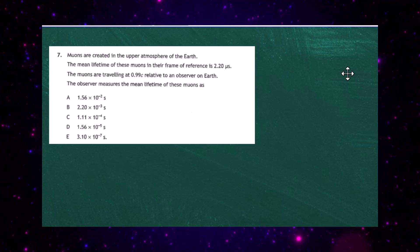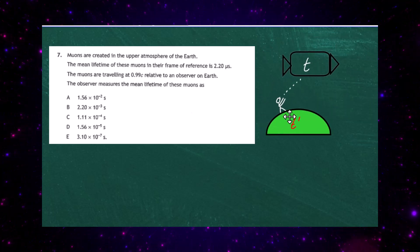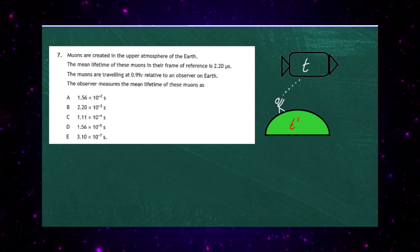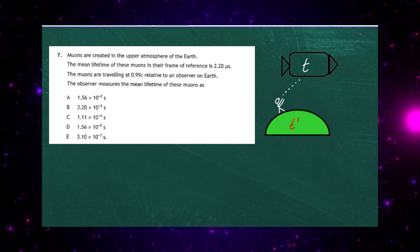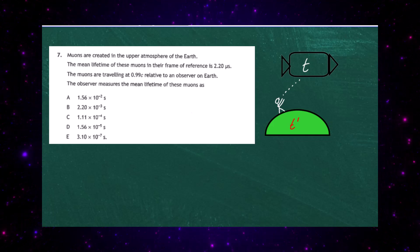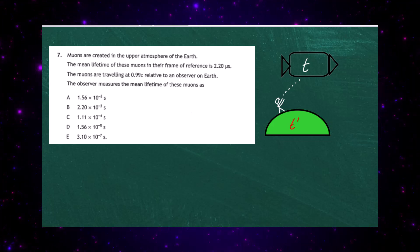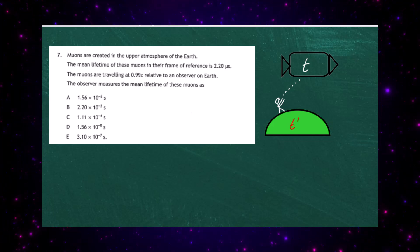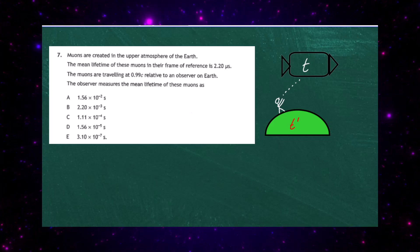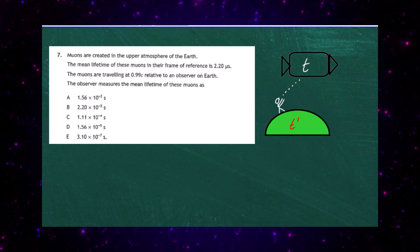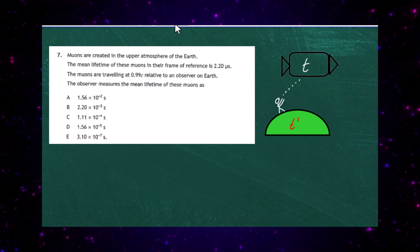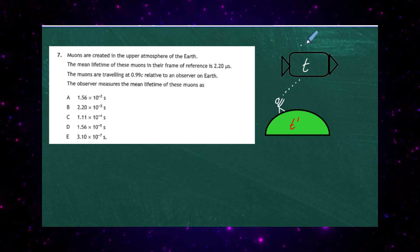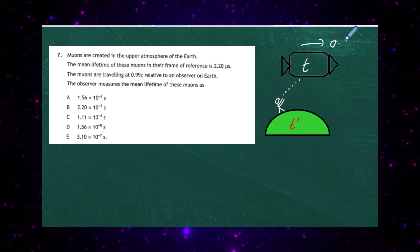A little picture shows what's happening: we have the observer on the Earth, the green semicircle representing the Earth, and a spacecraft representing the muon's frame of reference. If we measure the lifetime of the muon in its own frame of reference — its spacecraft — we measure T. But if you're an observer on the Earth as the spacecraft passes with a speed of 0.99c, then you'll measure a different time.